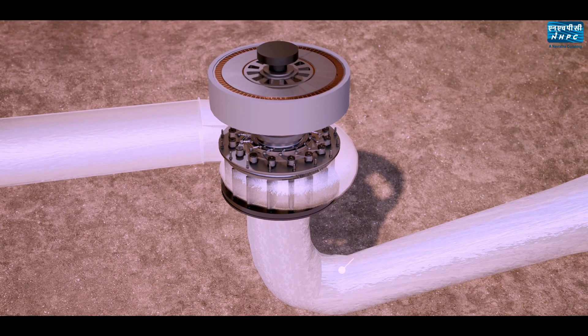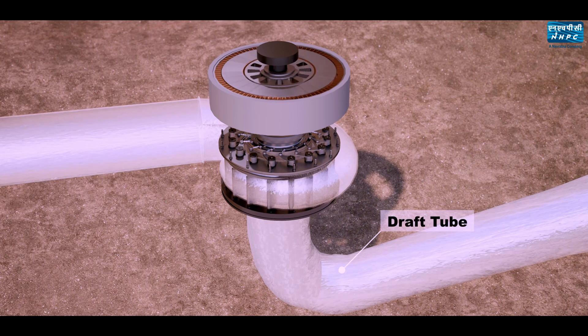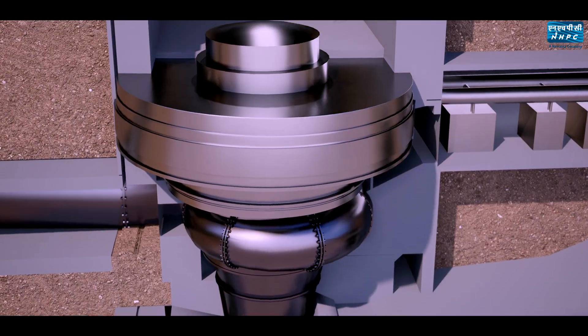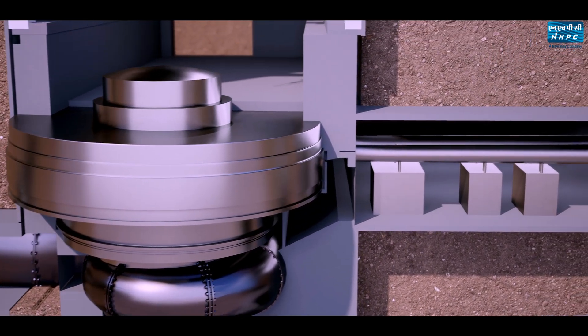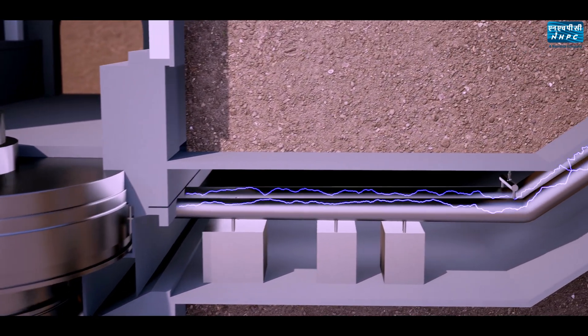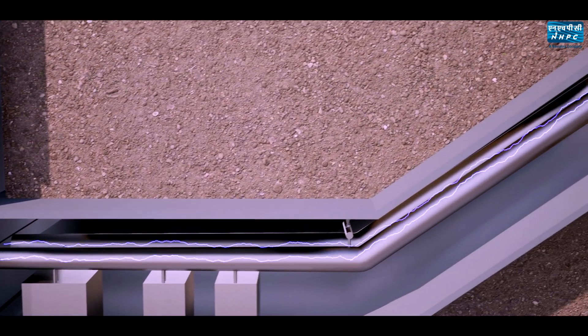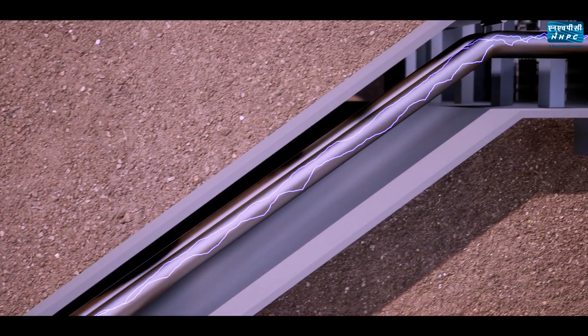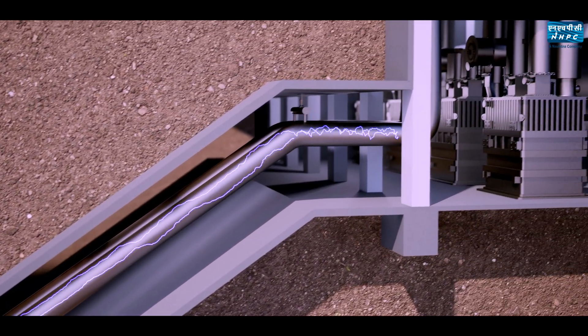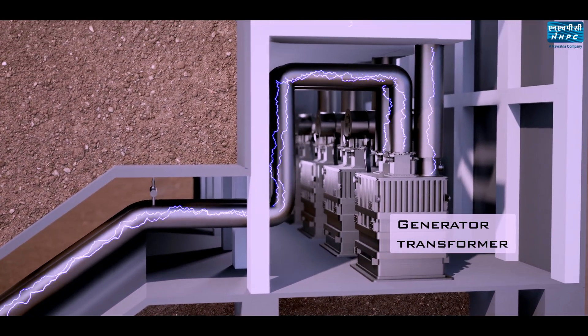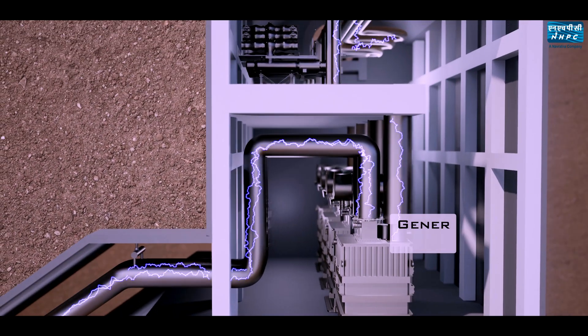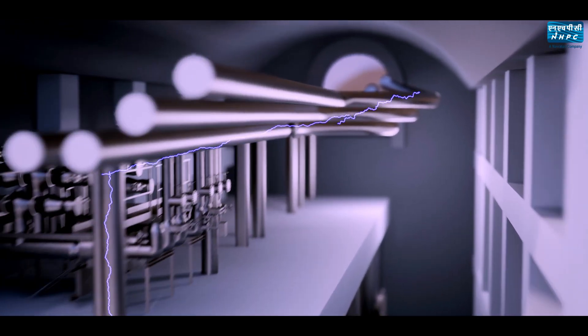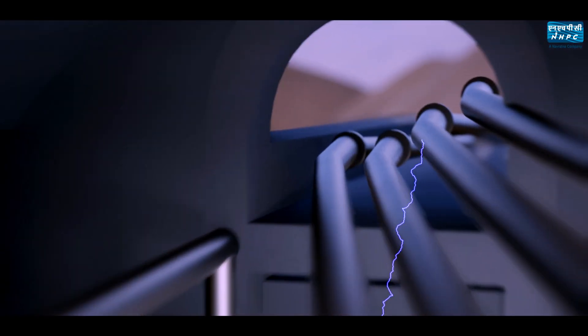Water after passing through the runner is channelized through the draft tube and tail race tunnels. The generator of Tista 6 has MVA rating of 138.89 and the generating voltage of 11 kV. The generator transformers step up the generating voltage from 11 kV to 220 kV. GIS is used as switching system to connect the generating units with pothead yard and 220 kV transmission lines.